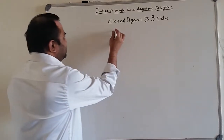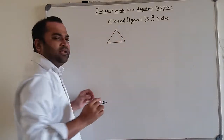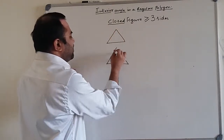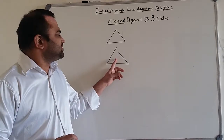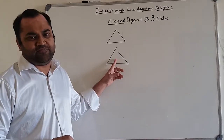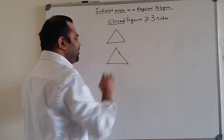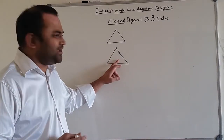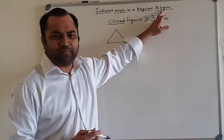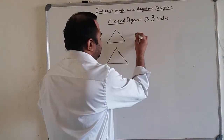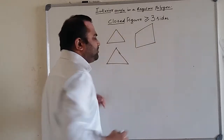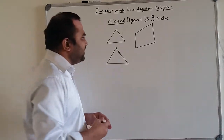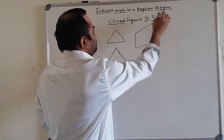Pay attention to the word 'closed.' An open figure is not considered a polygon because it is not a closed figure. If you close the figure by joining all three vertices, then it becomes a closed figure. A triangle is an example of a polygon. A quadrilateral — a closed plane figure having four sides — is also a polygon.